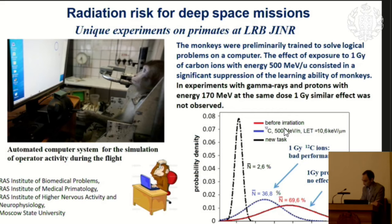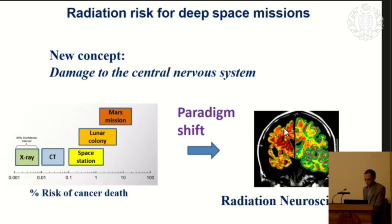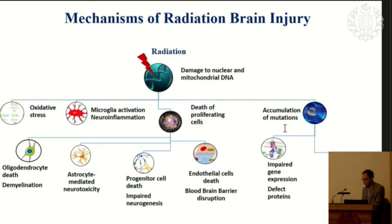The danger is real. If we launch a space mission, we can get not only some delayed effects — the main risk being cancer induction — but also risk to the success of the mission during the flight itself. This is why we are calling for radiation neuroscience research to produce such risk estimations. Moreover, we need to go deeply into the specific mechanisms of brain damage.